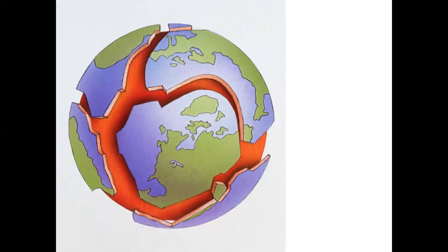If you remember from Chapter 1, the crust and the upper part of the mantle are brittle, while the part of the mantle below, called the asthenosphere, is ductile. The slow movements of the asthenosphere cause the brittle lithosphere to break into segments we now call plates. They come in two types: continental and oceanic.